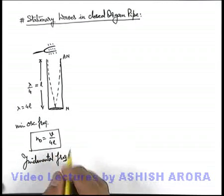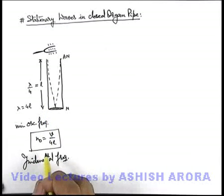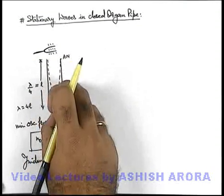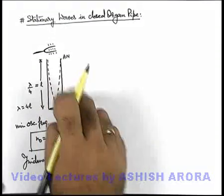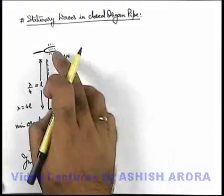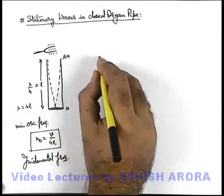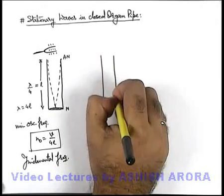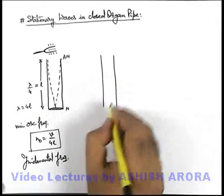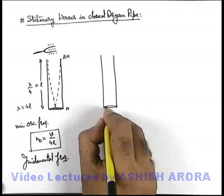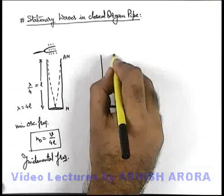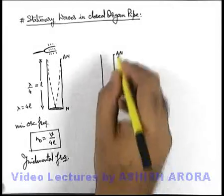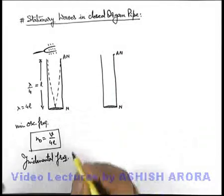For stationary waves in a closed organ pipe, if we increase the frequency the wavelength will slightly decrease and then the corresponding anti-node and node will not be formed, so energy will damp out. So let's consider the next higher frequency at which again node and anti-node can be obtained — anti-node at the open end and node at the closed end.